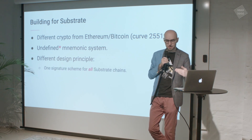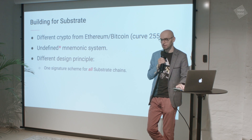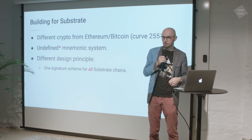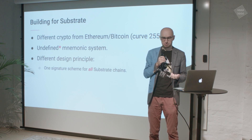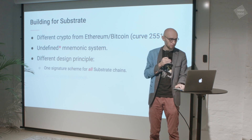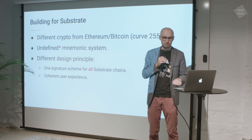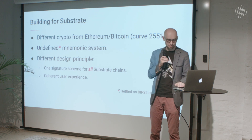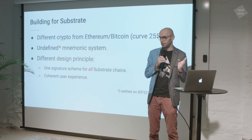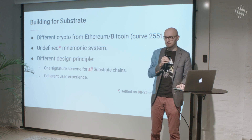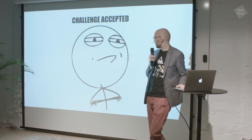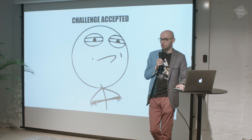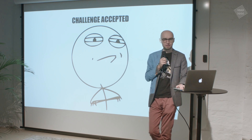We also had a different design principle: we want one signature scheme usable on all Substrate chains. So every time someone builds a new chain on Substrate, they don't have to go to every hardware wallet manufacturer and ask for support, because technically the signature scheme is the same. We also want coherent user experience. We settled on BIP32-compatible schema — everything in Substrate uses the same kind of recovery phrases you're used to with Bitcoin and Ethereum.